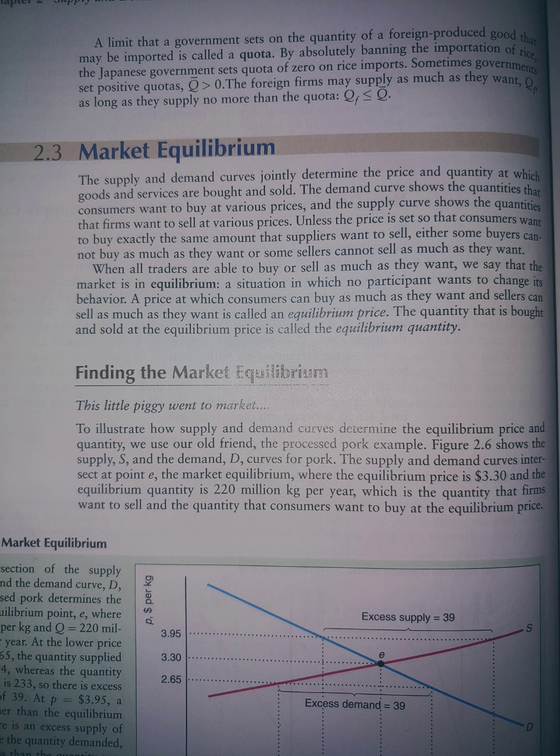Unless the price is set so that customers want to buy exactly the same amount that suppliers want to sell, either some buyers cannot buy as much as they want, or some sellers can't sell as much as they want.